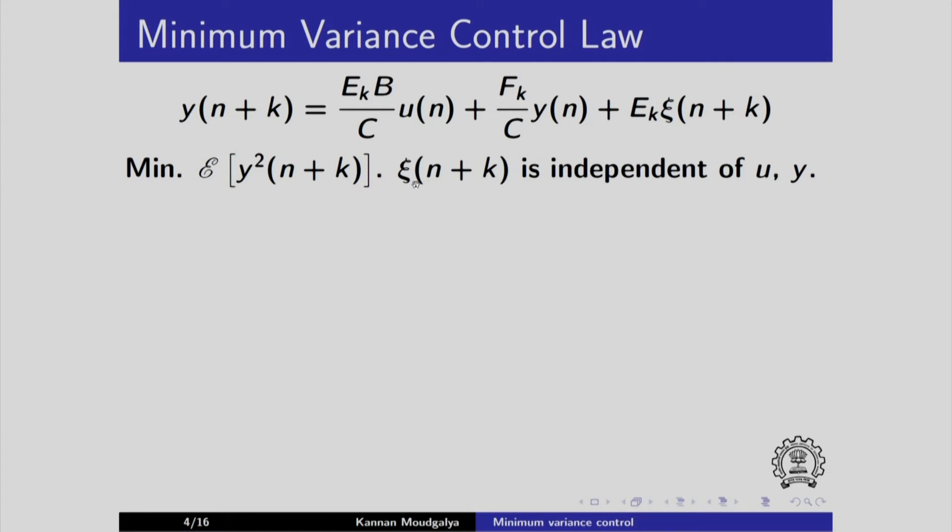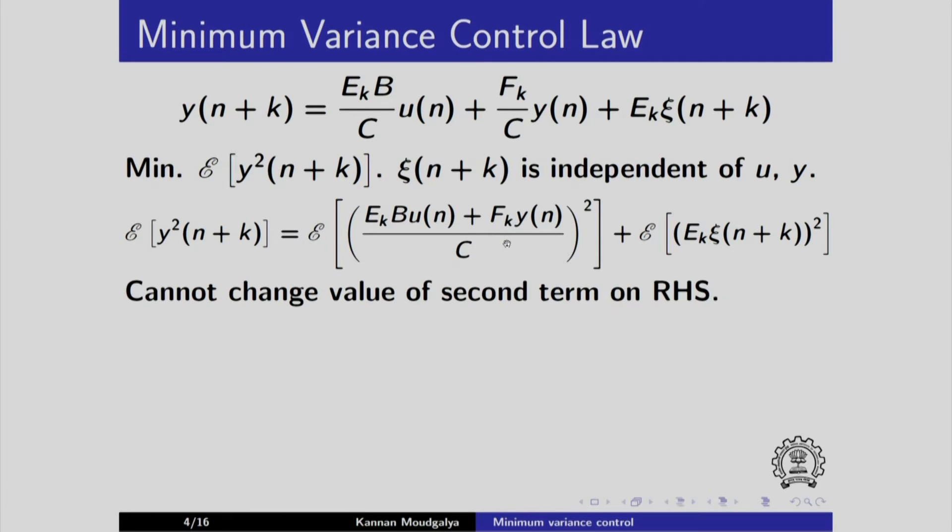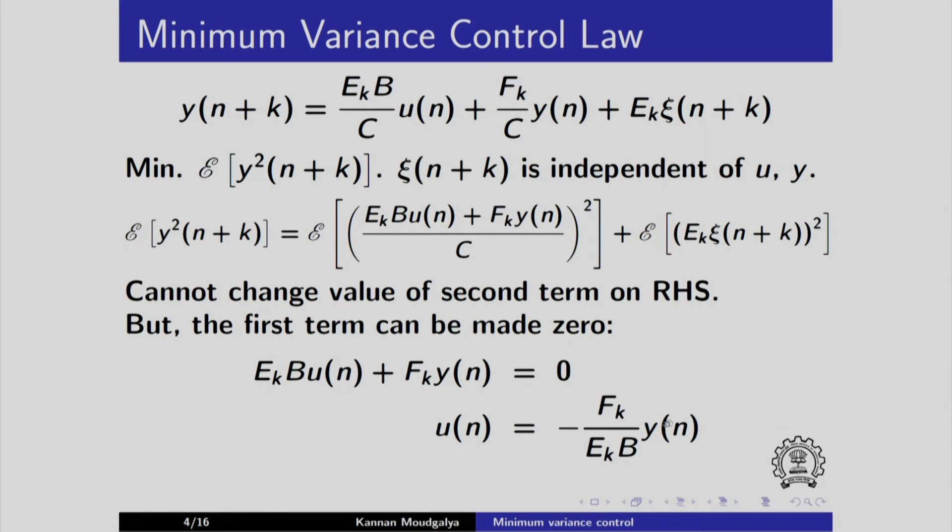Notice that C of n plus k is independent of the u and y terms here. In view of that, the cross terms are 0. Basically, I square both sides and take expectation. The cross term becomes 0. I will have the square of this here and the square of the first two together here. We cannot change the value of the second term on the right hand side because it involves all future noise terms. But the first term can be made 0. We let that equal to 0 and when I solve this for u n, I get this expression.